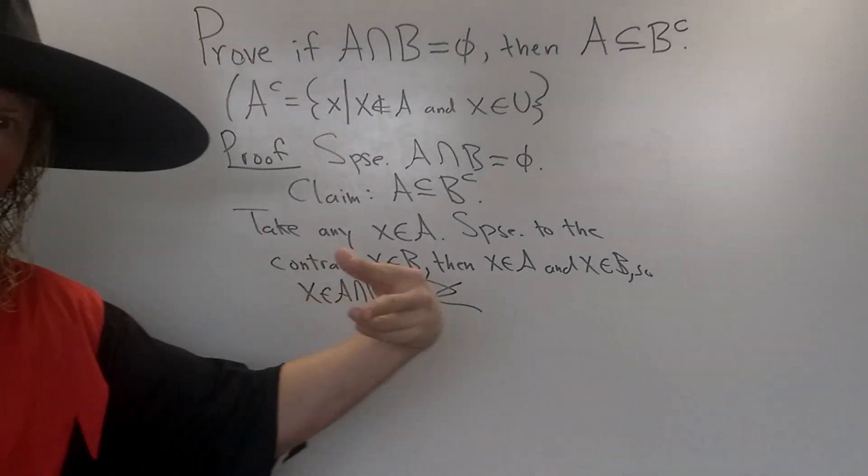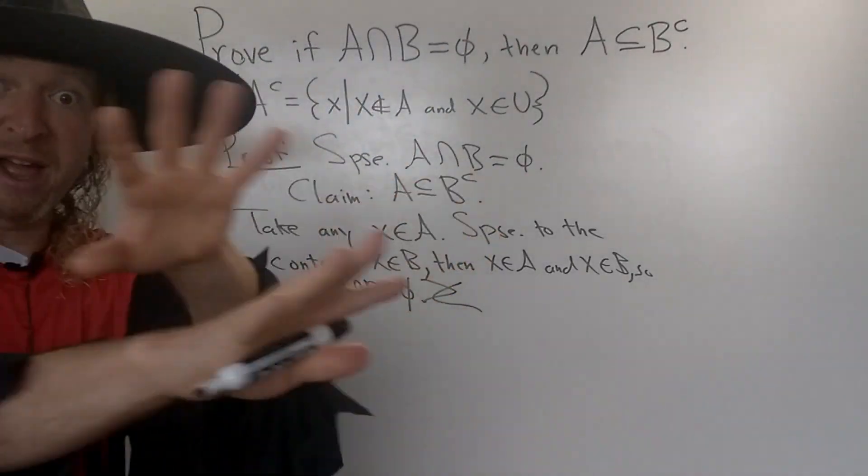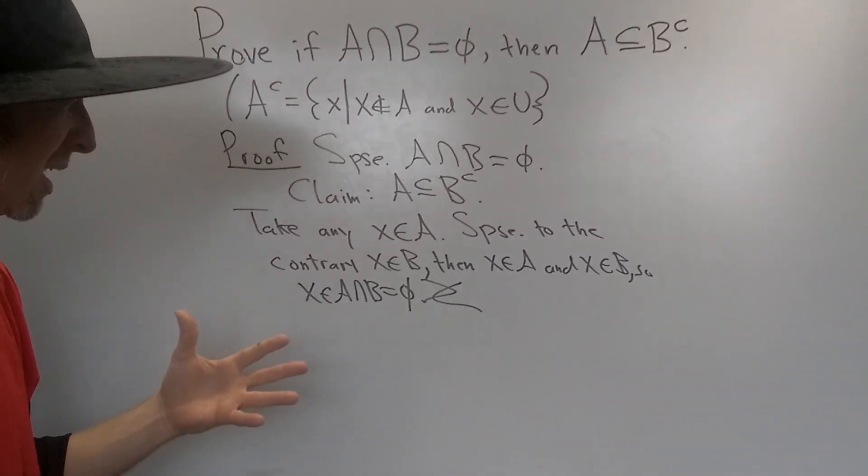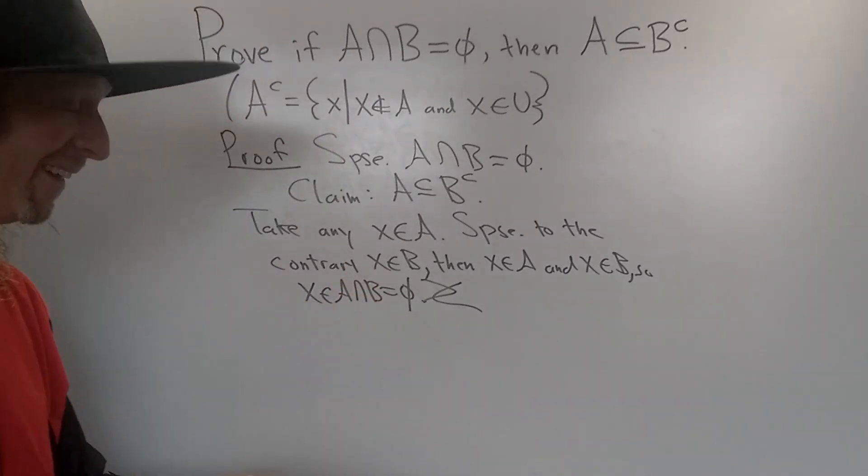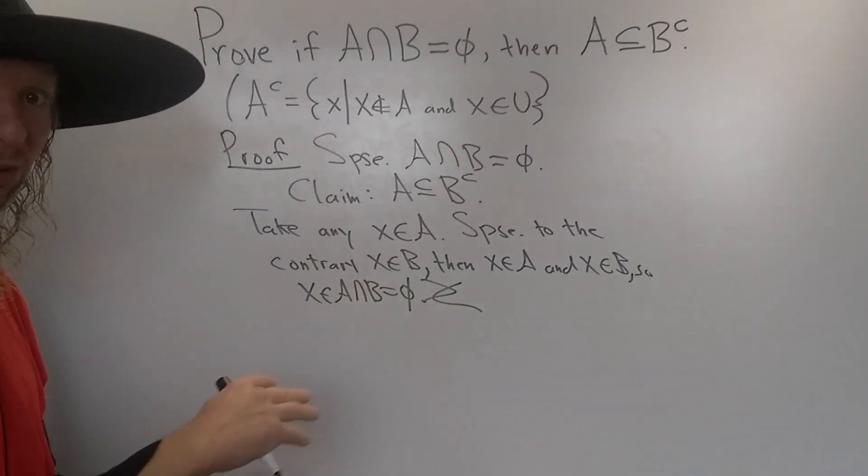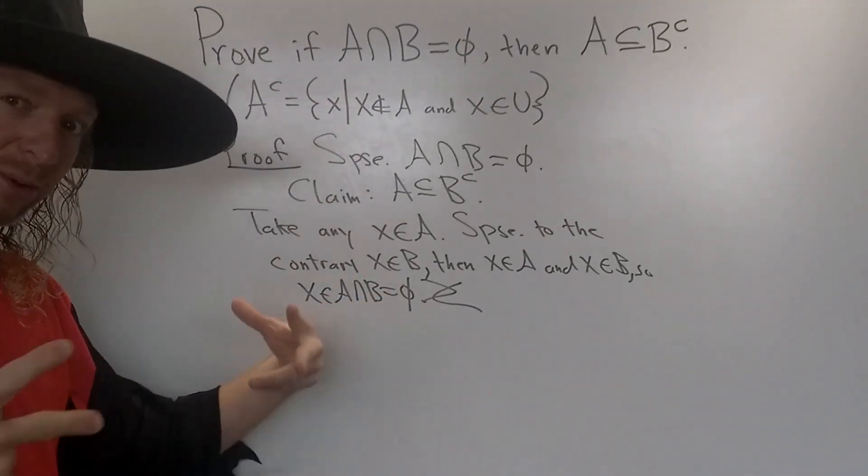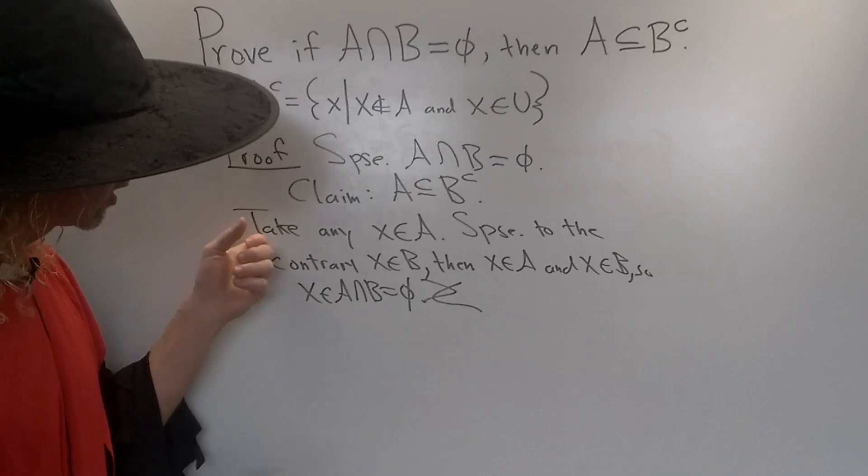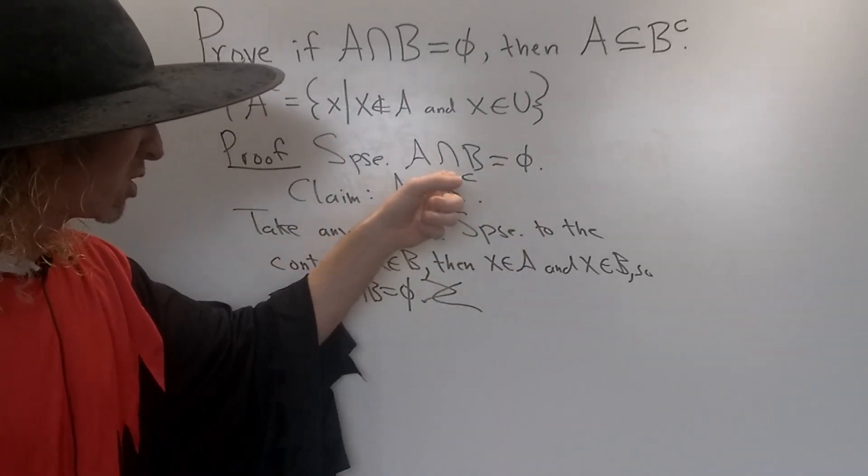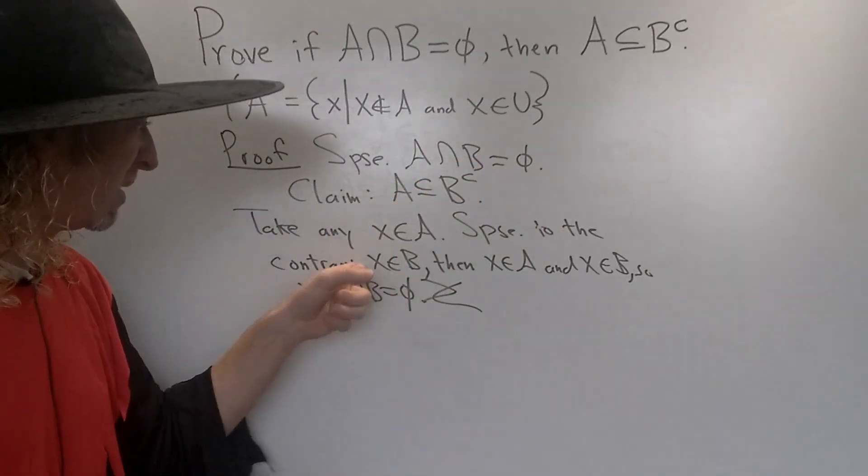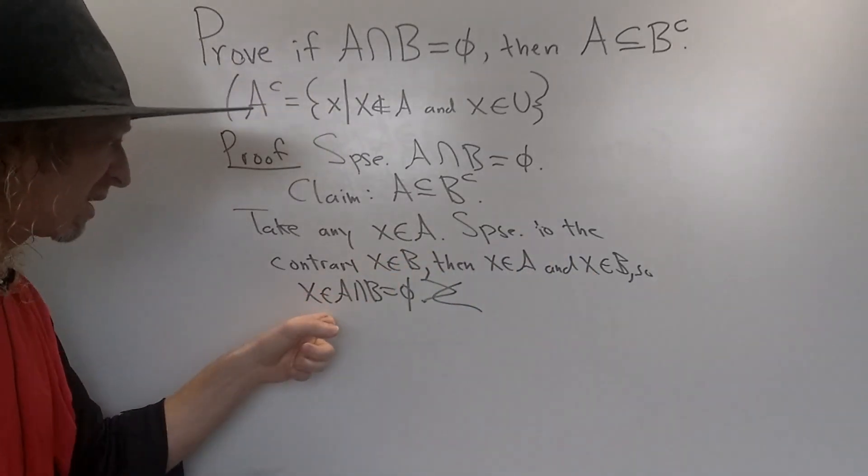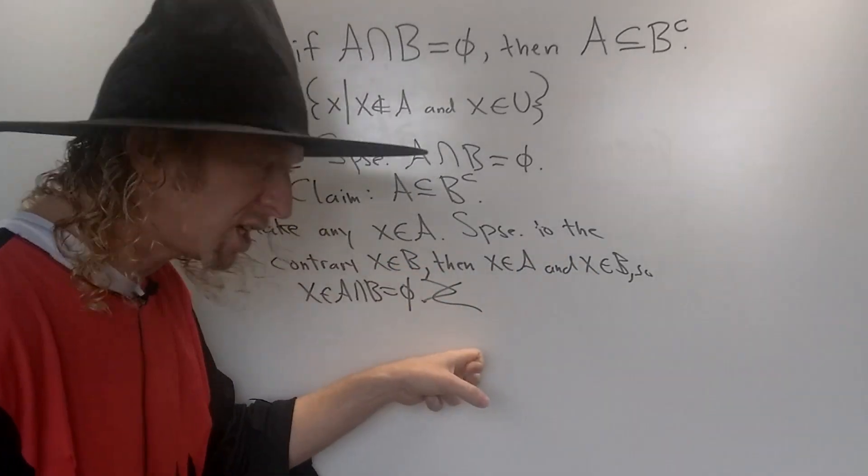The symbol means contradiction. It's like opposing arrows. Where does that come from? I have no idea. I saw some guy do it once in class, and I'm like, that's really freaking cool! So I copied it. I stole it from this guy. Really good professor. Really cool symbol. Contradiction. Okay, so we took an x in A, and we're trying to show it's not in B. So suppose it is in B. Then it means x is in A and x is in B. That means it's in the intersection, which is empty, a contradiction.